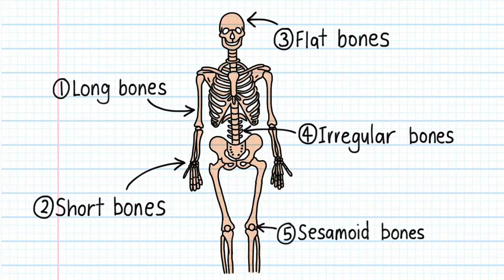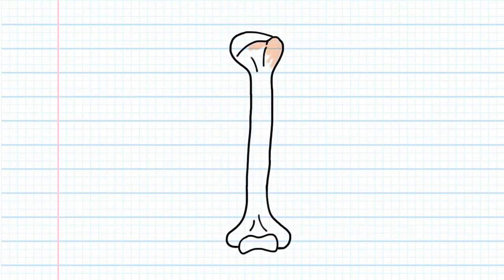Long bones, short bones, flat bones, irregular bones and sesamoid bones. In this video I'll discuss the anatomy of a typical long bone like for example the humerus.